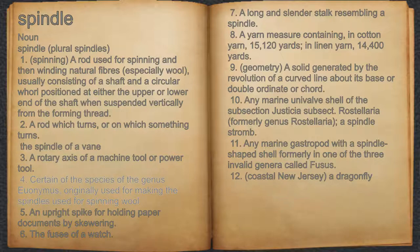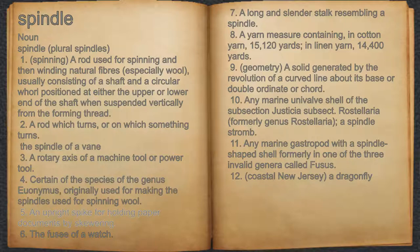4. Certain of the species of the genus Euonymus, originally used for making the spindles used for spinning wool. 5. An upright spike for holding paper documents by skewering.